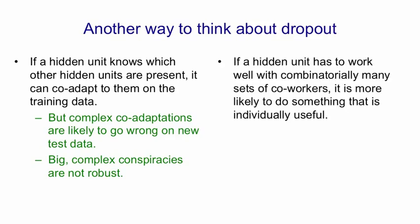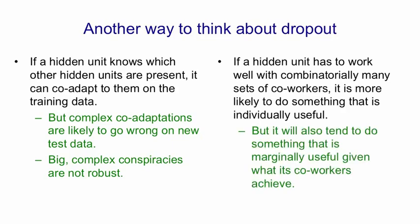So by using dropout, we force a hidden unit to work with combinatorially many other sets of hidden units. And that makes it much more likely to do something that's individually useful rather than only useful because of the way particular other hidden units are collaborating with it. It needs to do something that's marginally useful given what its co-workers tend to achieve. And I think this is what's giving nets with dropout their very good performance.